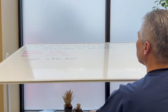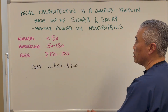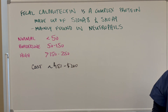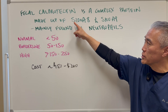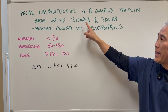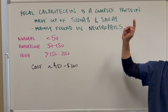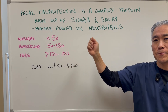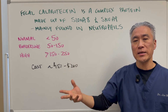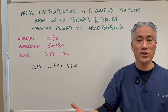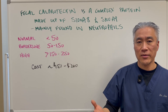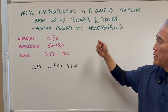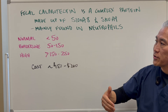Fecal calprotectin is a complex protein made up of two smaller proteins called S100A8 and S100A9. It's mainly found in neutrophils, which are basically a component of white blood cells and help to determine things like bacterial infections and other things. But it can be found in other immune cells also.